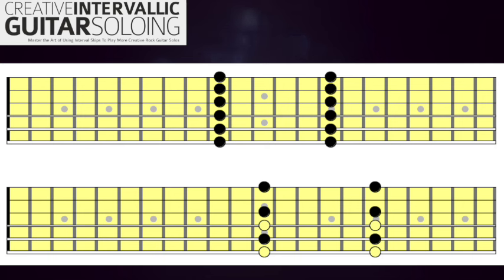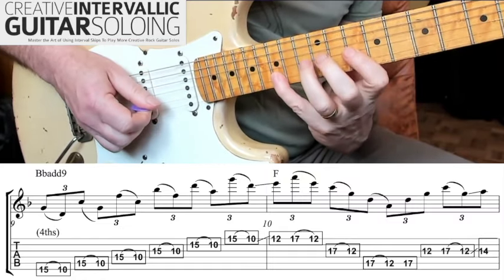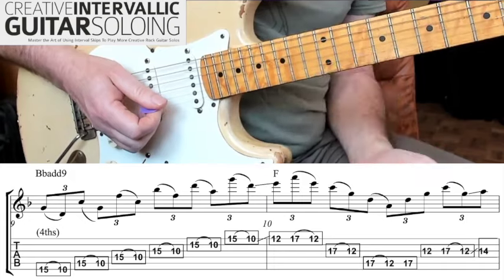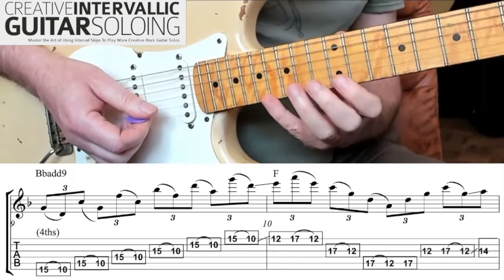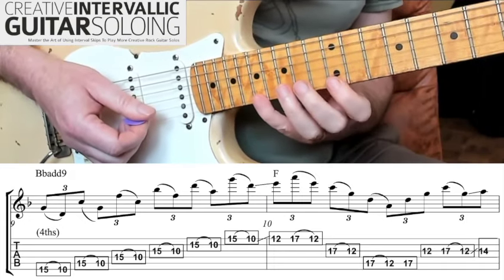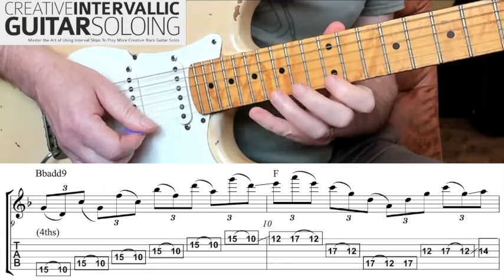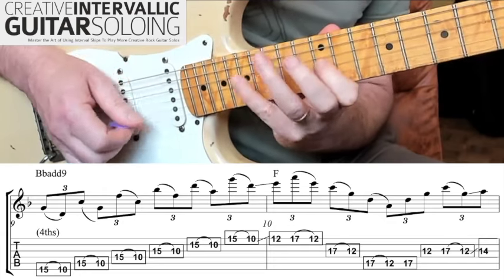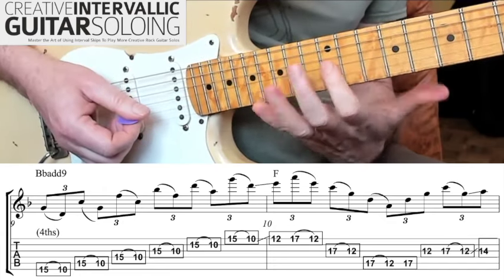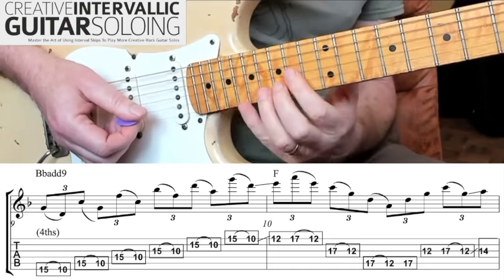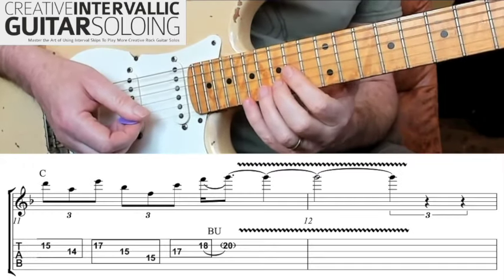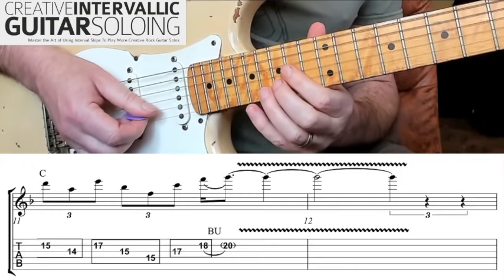This is a line that uses the symmetry of fourths — this is in C Mixolydian. The first one is this. Then we move up a tone to a similar shape, but now using string skips. We're actually sliding to that last one, and then we use a series of fours. You can see where they all are on the chart.